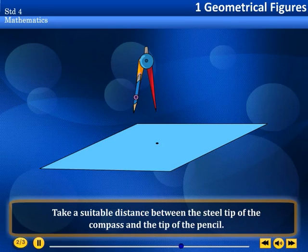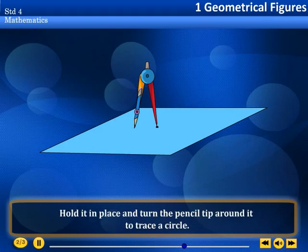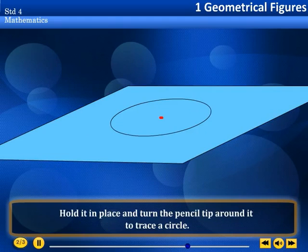Take a suitable distance between the steel tip of the compass and the tip of the pencil. Place the steel tip on the chosen point. Hold it in place and turn the pencil tip around it to trace a circle.